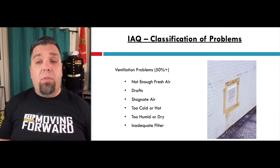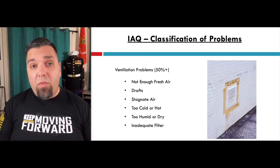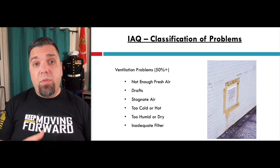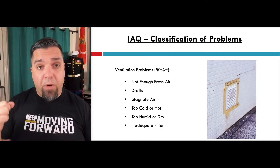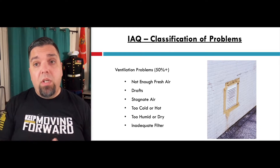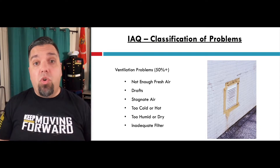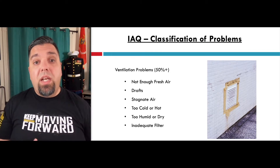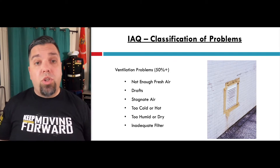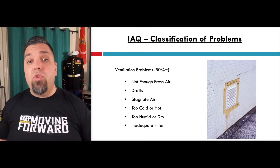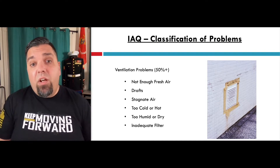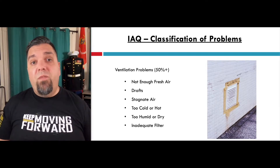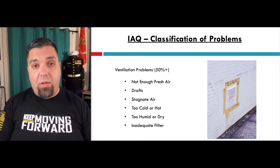A lot of these problems revolve around ventilation — more than half of the problems fall into these categories: not enough fresh air in the home, drafts that you're not controlling, or stagnant air because you're not moving the air. It's either too hot, too cold, too humid, or too dry when you're bringing it in, and then of course if you're not filtering the air. These all add up to 50% of the air problems in the house.